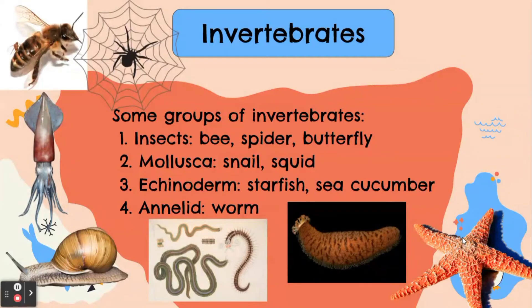3. Echinoderm. The examples of echinoderm are starfish and sea cucumber. 4. Annelid. The example of annelid is worm.